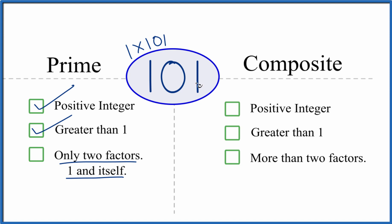It turns out that there aren't any other factors, any other numbers that go into 101 evenly. So there are only two factors, and that means that 101 is a prime number.